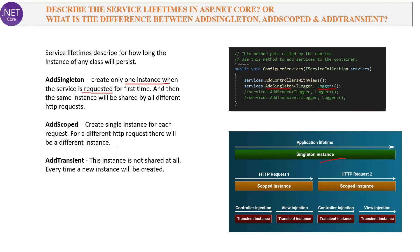The second type is AddScoped. Sometimes you want a single instance for just one request — within a single request the instance is shared, but other requests get their own instance. In the diagram you can see HTTP request 1 uses one scoped instance and HTTP request 2 uses a different scoped instance. The last one is AddTransient, which means a new instance is created every time it is required — not shared across different requests, and not even within the same request.